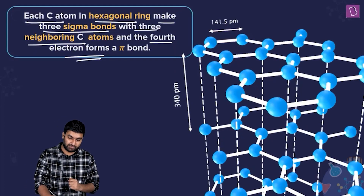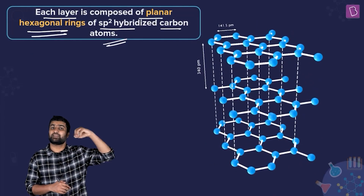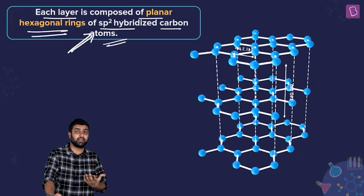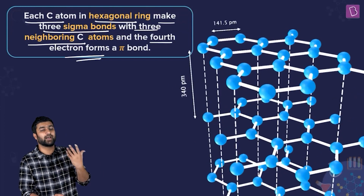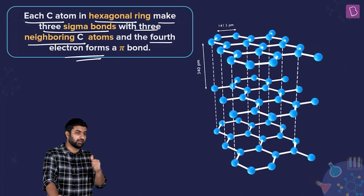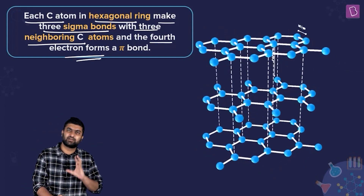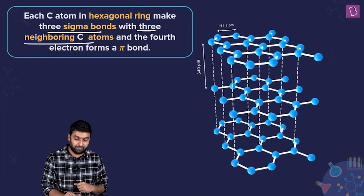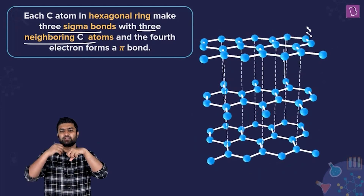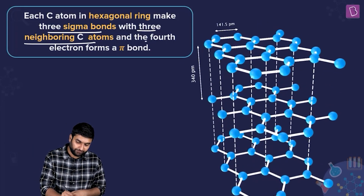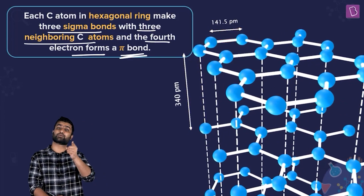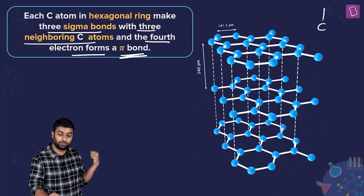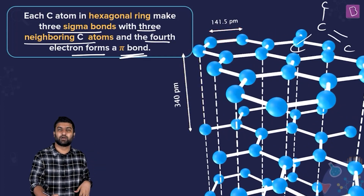Let's revisit this — these are direct exam questions. The hybridization of carbon in graphite is sp2. Each carbon in the hexagonal ring makes three sigma bonds with three neighboring carbon atoms. The fourth electron of each carbon forms a pi bond with a fourth electron on another carbon atom.